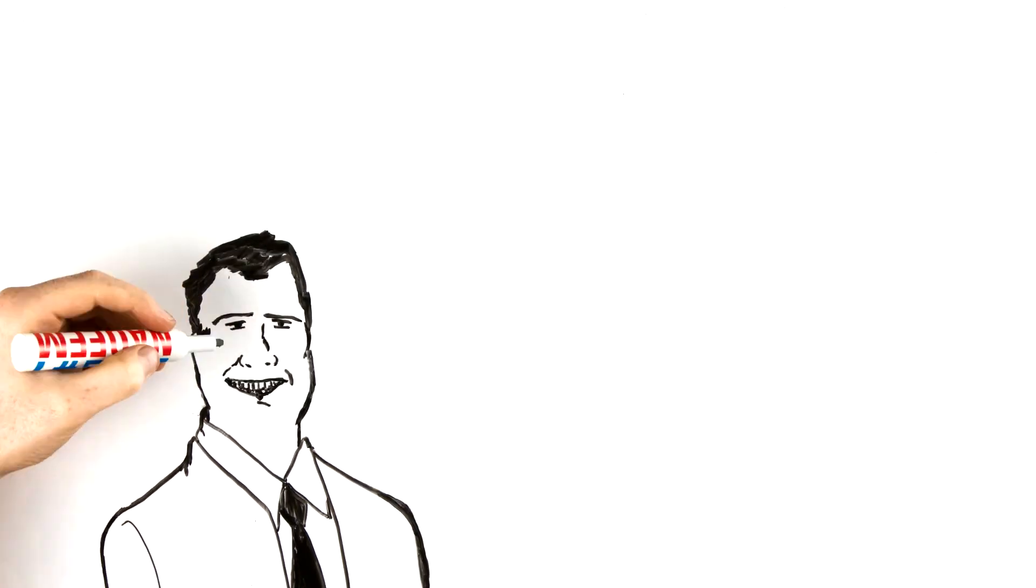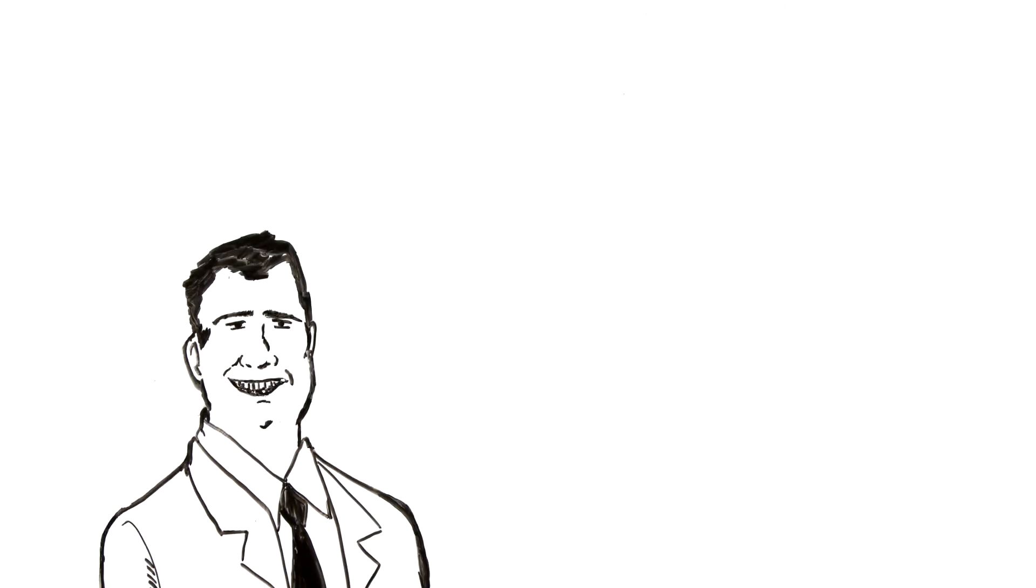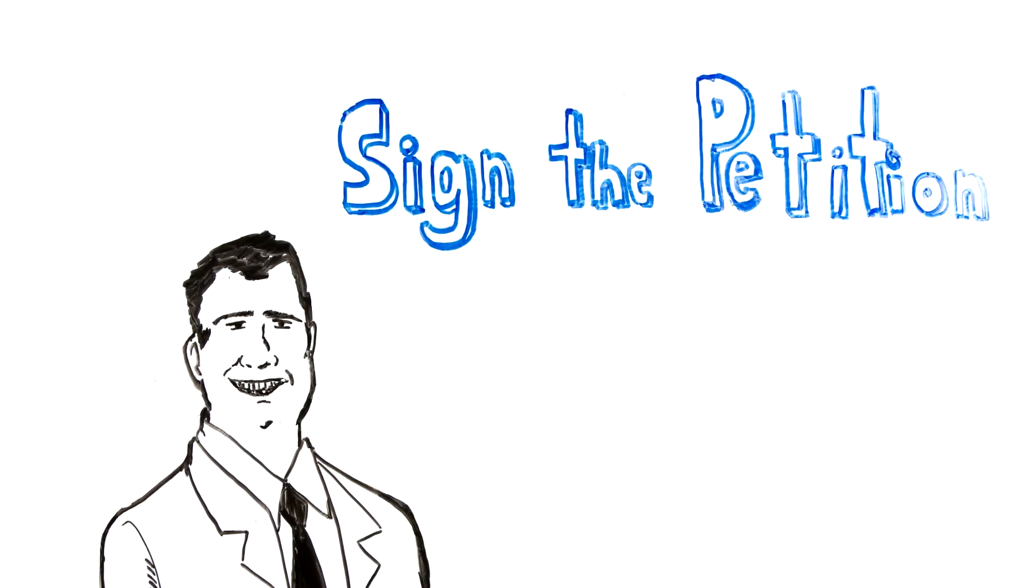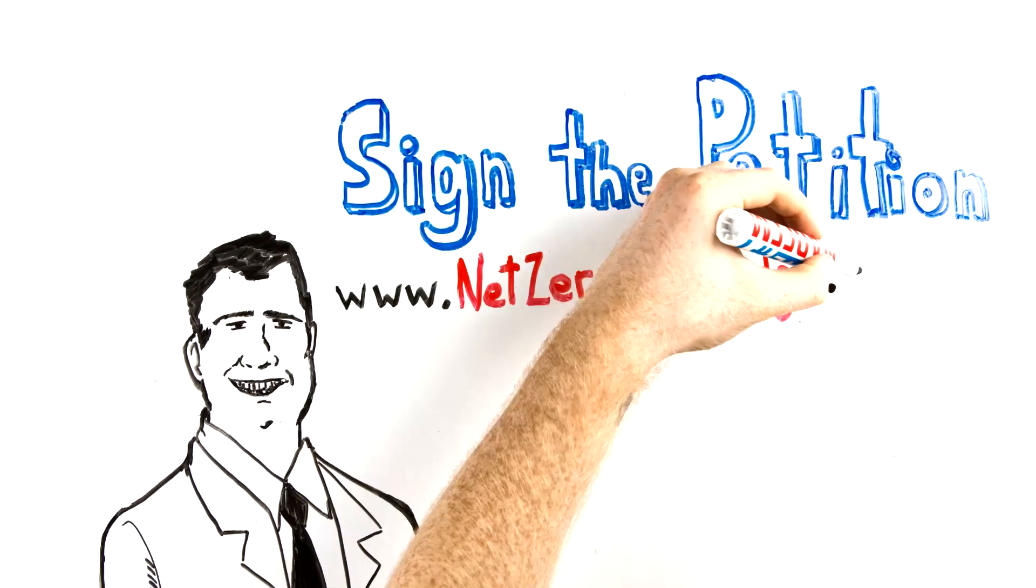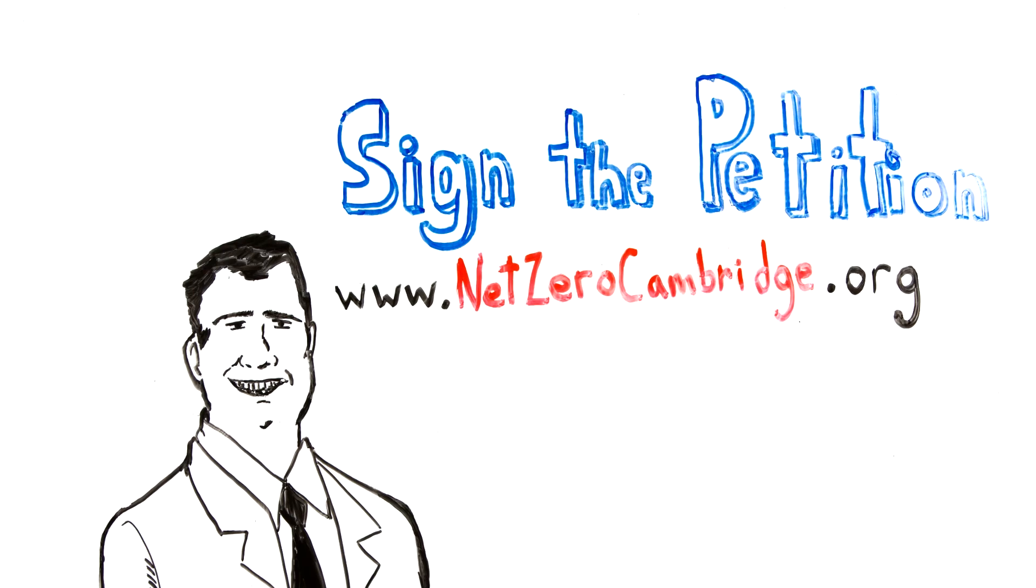The Net Zero Plan was filed as a citizen zoning amendment by Cambridge Attorney Mike Connolly, and it's now pending before the City Council and the Planning Board. Visit www.netzerocambridge.org to sign the petition and learn more.